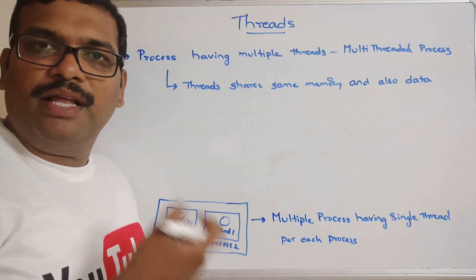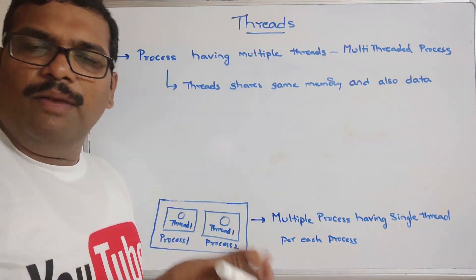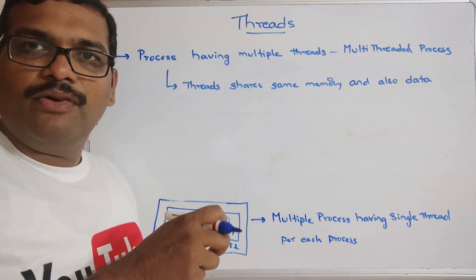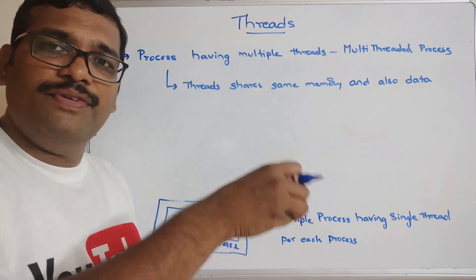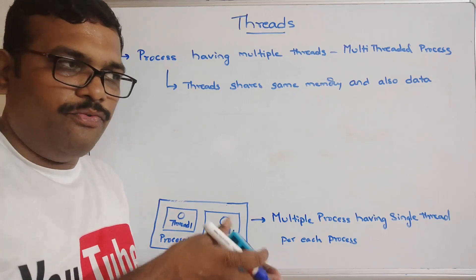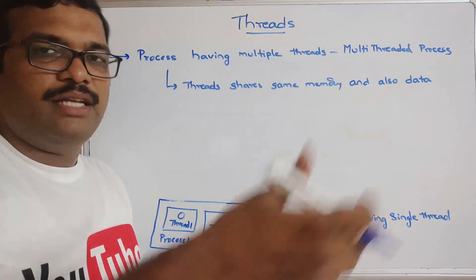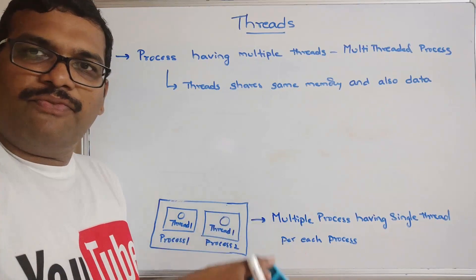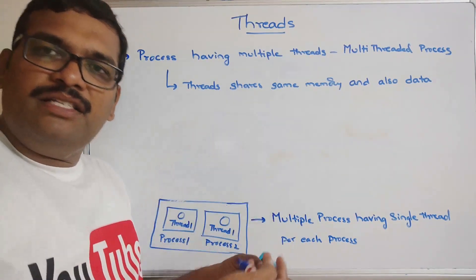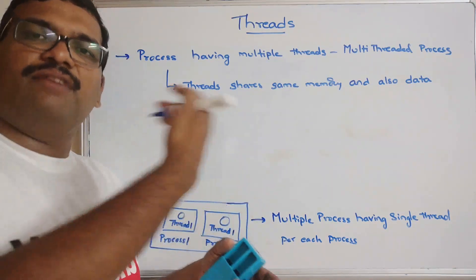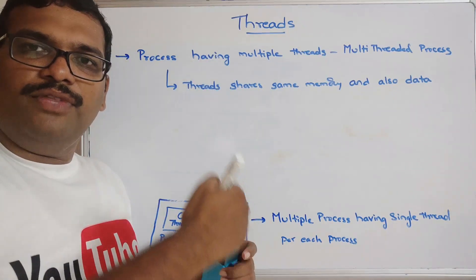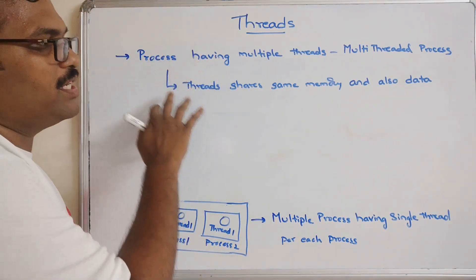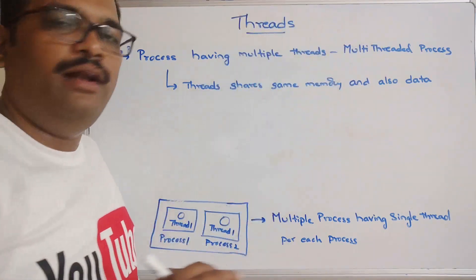For example, the ATM machine — all the services will be related to a single bank account. The account holder is one process. If two persons each have one account, we can consider those two accounts as multiple processes. For each account we can generate a PIN, get a mini statement, do a withdrawal, or a deposit. All the threads of the same process share the same memory and data.